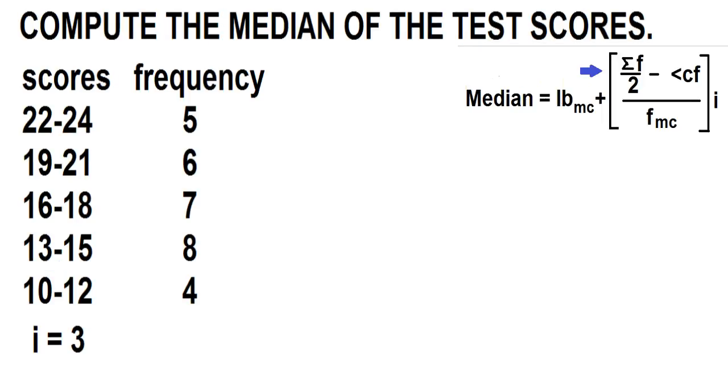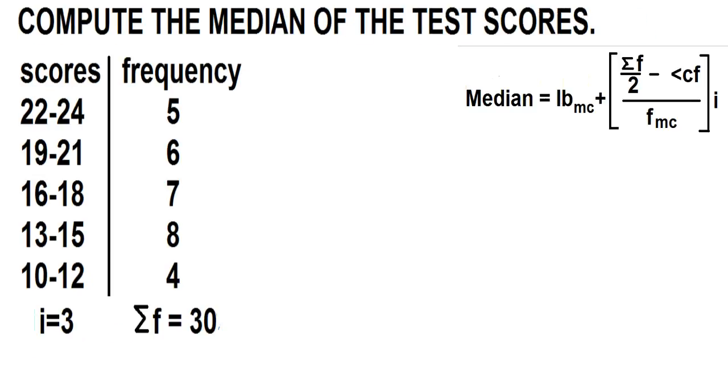One-half of the total frequency is just the total frequency divided by 2. The total frequency is 30. So one-half of 30 is 15.